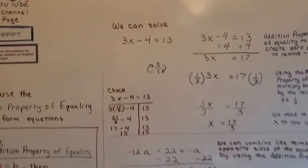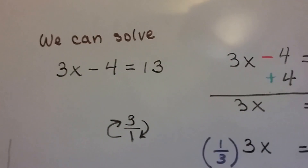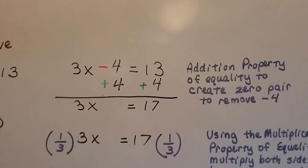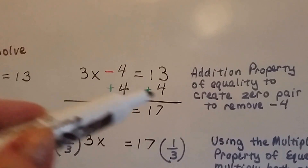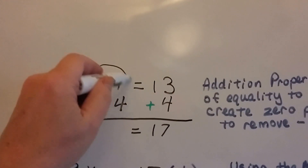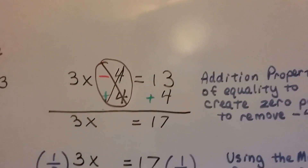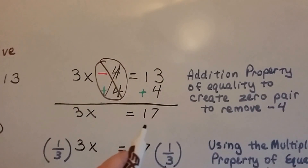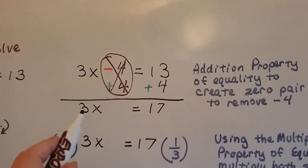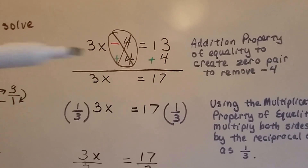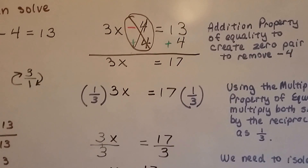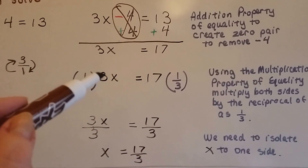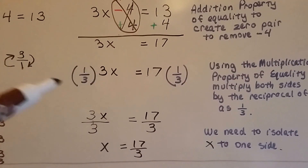So we can solve 3x minus 4 equals 13. By using the addition property of equality first, we'll create a zero pair and remove that negative 4. By adding 4 to each side of the equation, we create a zero pair and eliminate it — negative 4 plus 4 is zero. Now this side is 17 and this side is 3x. We still need to get x alone, so we need to multiply this side of the equation by the reciprocal of the coefficient 3.